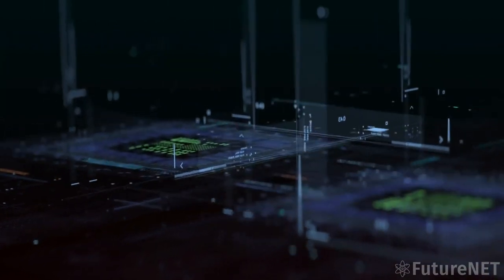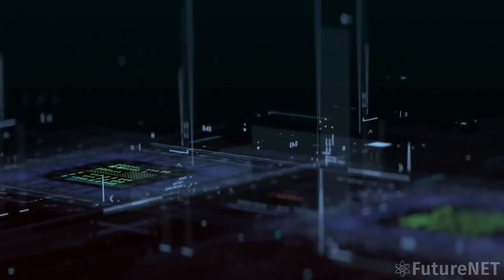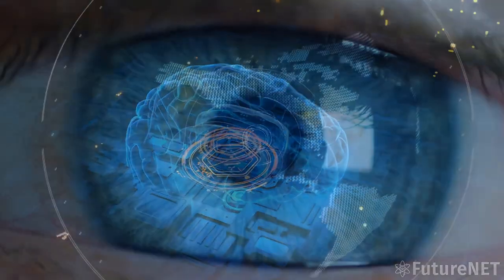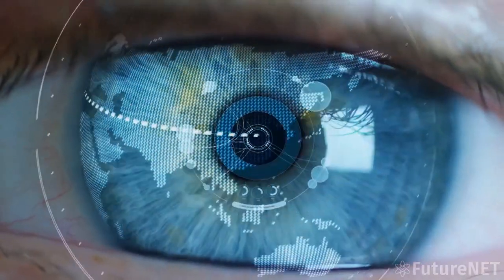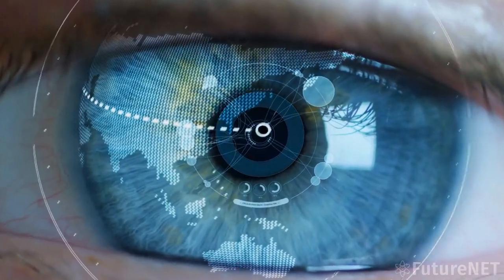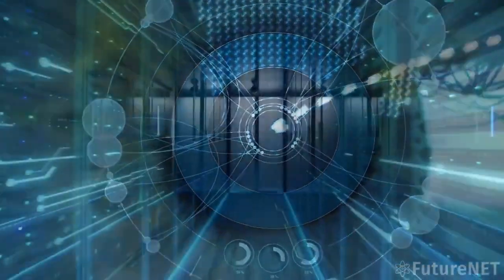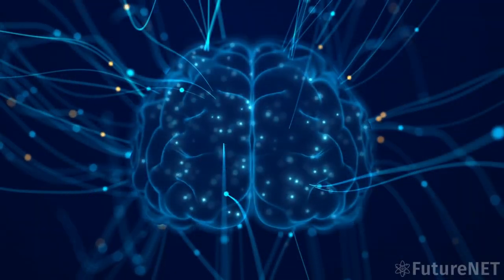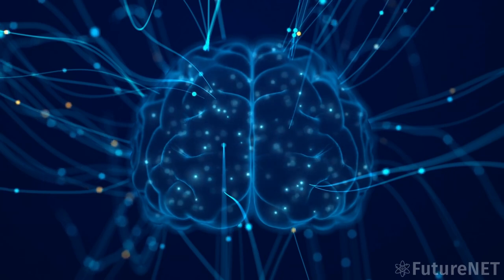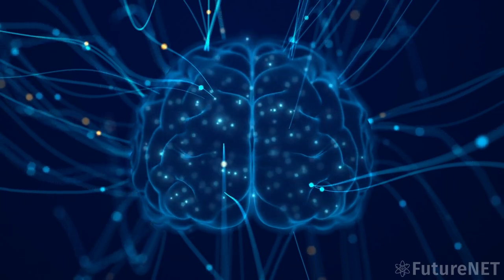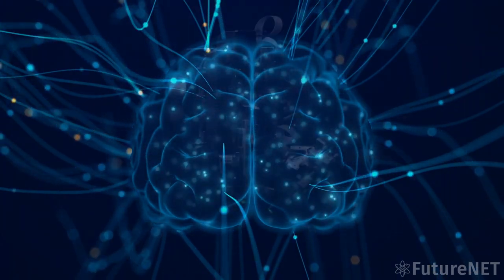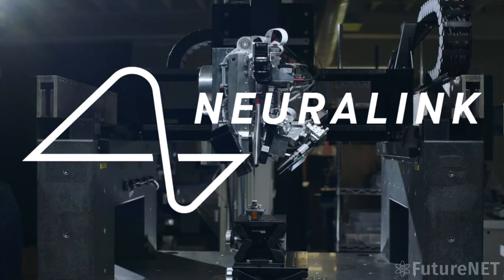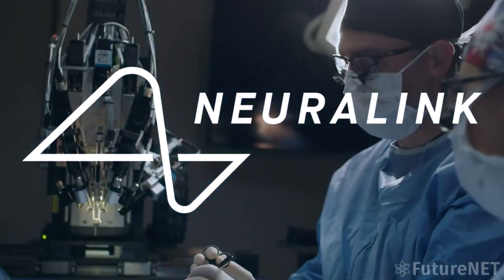Musk's new company will reportedly focus on developing AI that is safe and beneficial to humanity, much like OpenAI's original mission. Musk believes that AI should be used to enhance human capabilities rather than replace them. However, Musk's new company will also have a unique focus on brain-machine interfaces. Musk has been vocal about his belief that the future of humanity depends on our ability to merge with machines.